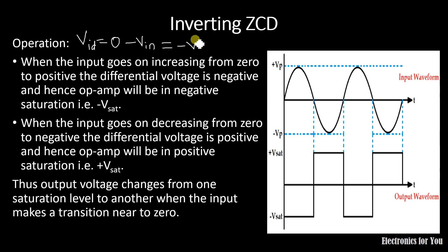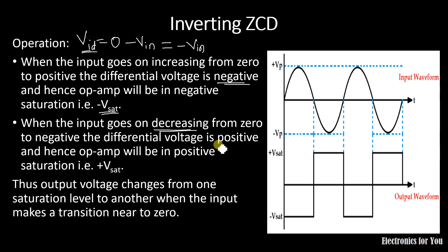For a positive input value, VID is negative and therefore the output will be in negative saturation. For a negative input value, minus times minus is positive, so the differential voltage will be positive and the output will be in positive saturation. Since it is an inverting ZCD, the output is inverted — for a positive input you get a negative output, and for a negative input the output is positive. This is the working of the inverting ZCD.